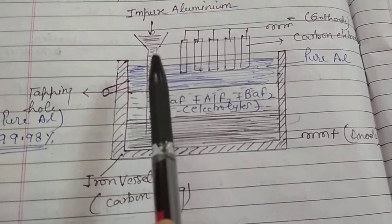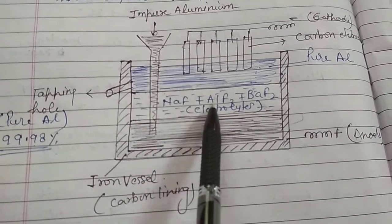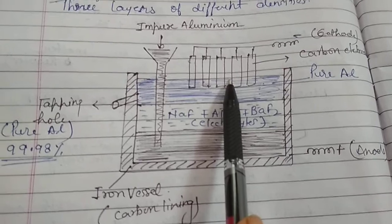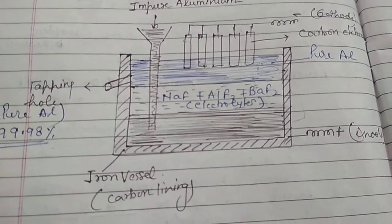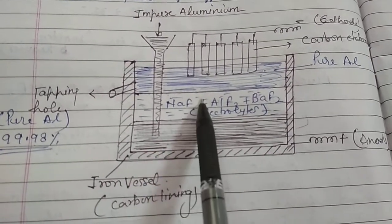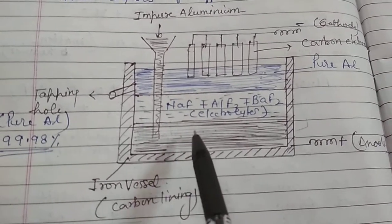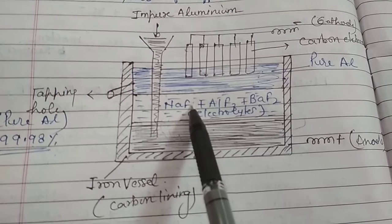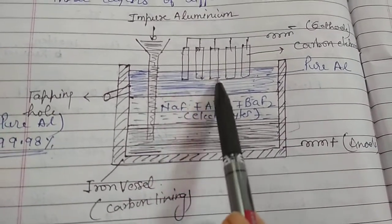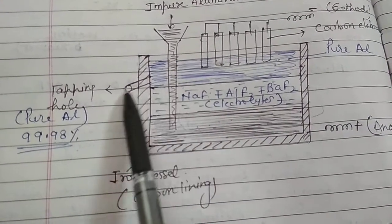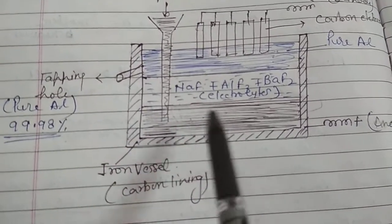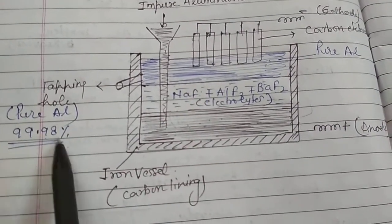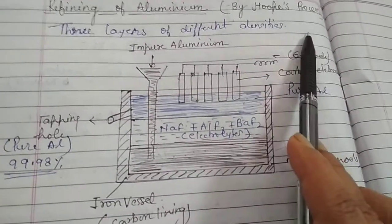When electricity is passed, aluminium ion from the middle layer moves towards the cathode and gets reduced to give pure aluminium, and an equivalent amount of aluminium moves from the impure aluminium layer to the middle layer. So the impure aluminium ion moves to the middle layer of electrolyte, and from there it moves to the uppermost layer of pure aluminium, which can be taken out from time to time through the tapping hole. The impurities are left behind at the bottom, and we are able to get around 99.98% pure aluminium by the Hoops process.